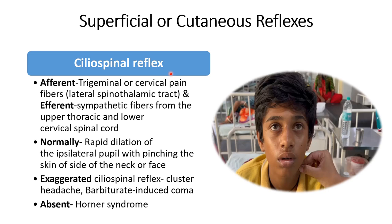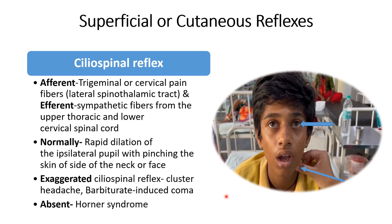In the cilio-spinal reflex, we have to pinch the side of the neck or the face. It will lead to 1 to 2 mm pupillary dilatation of the ipsilateral side. The afferent for this reflex is the trigeminal or cervical pain fiber of the lateral spinothalamic tract, and the efferent is the sympathetic fiber from the upper thoracic and lower cervical spinal cord. An exaggerated cilio-spinal reflex — more or persistent dilatation — is seen in cluster headache or barbiturate-induced coma. It is absent in Horner syndrome.